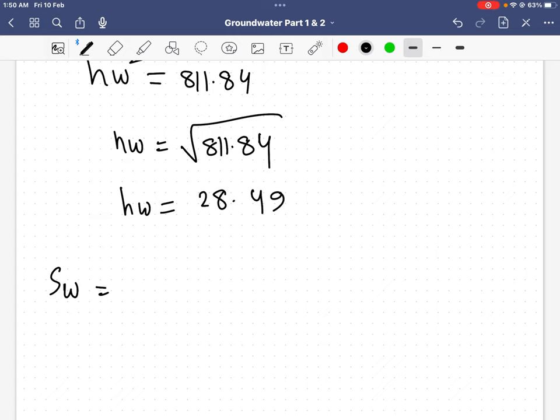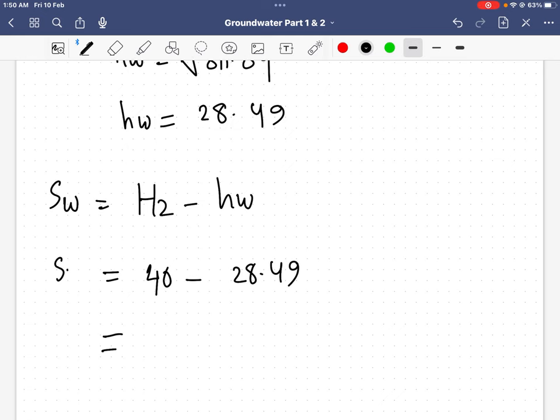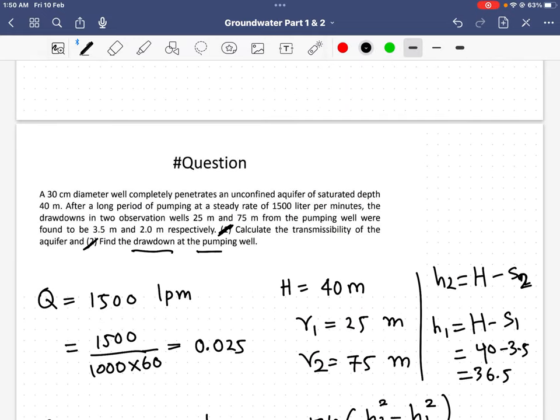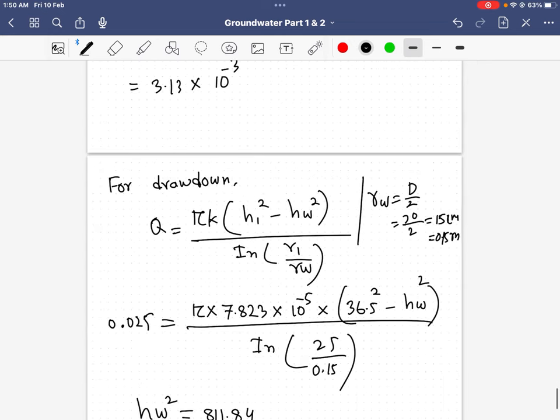I have to find sw using the formula H minus hw. My H was 40 and I got hw is 28.49. If I subtract, I will get sw equals 11.51 meters. So this is my drawdown at the pumping well. Thank you so much.